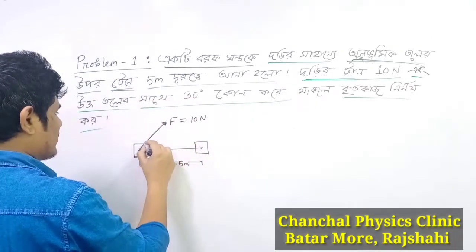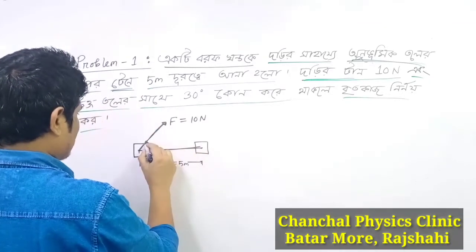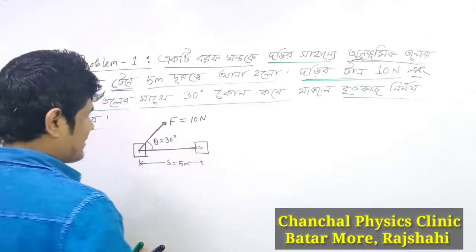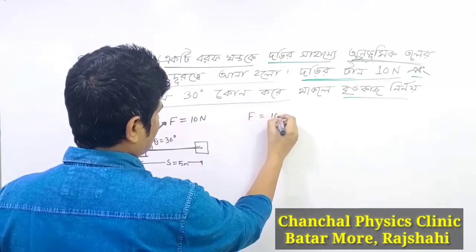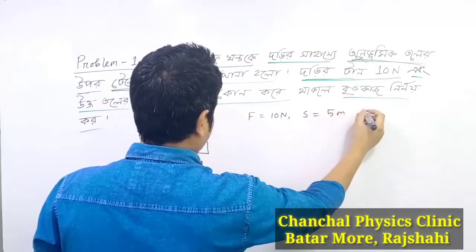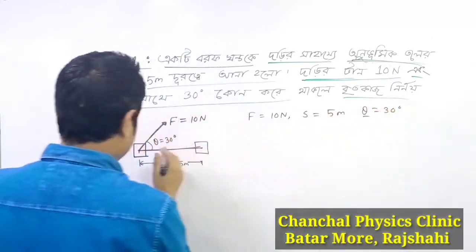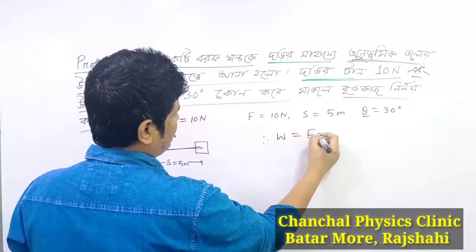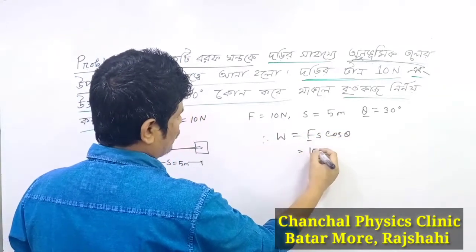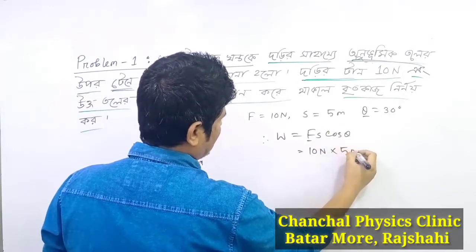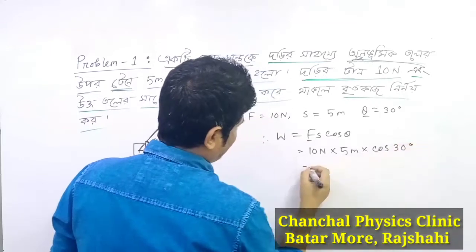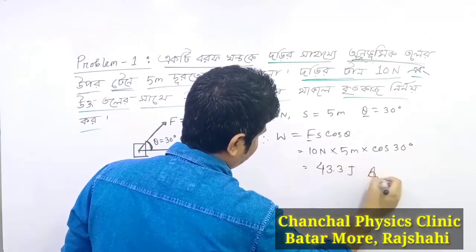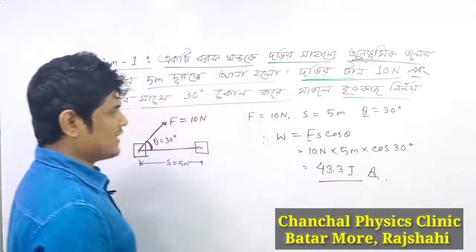This one is T0. Now, you will see each T0 is 30 degrees. So what makes fr? We can get fr. We can write down the calculation which is 10 N and 5 meters and then cos 30.